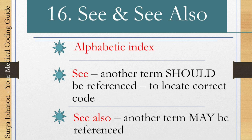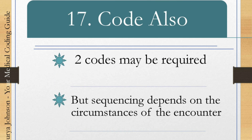Convention 16 is 'see' and 'see also.' In the alphabetic index, if you see the word 'see' next to a code, disease, or symptom, you should definitely go and look there — it will direct you where to go. For example, if you search 'disorder,' it may show 'see disease,' and you must go to 'disease' to locate the correct code. 'See also' means there is another reference that may be helpful, but it is not mandatory to follow — it is optional, unlike 'see,' which you must always follow.